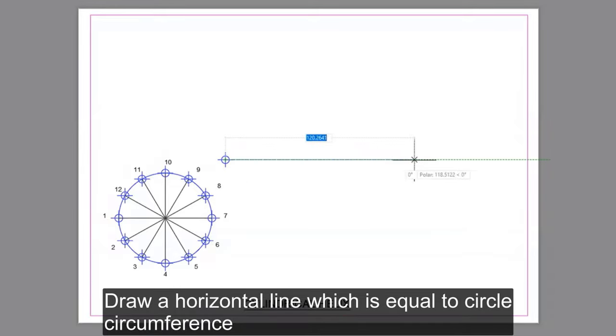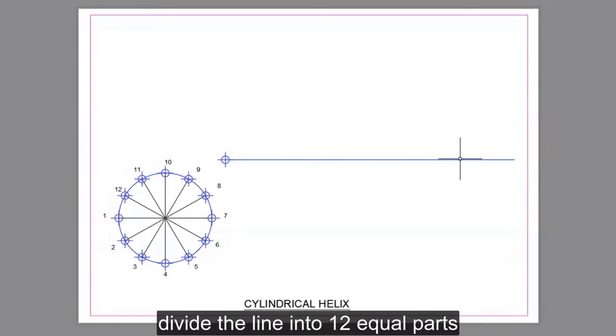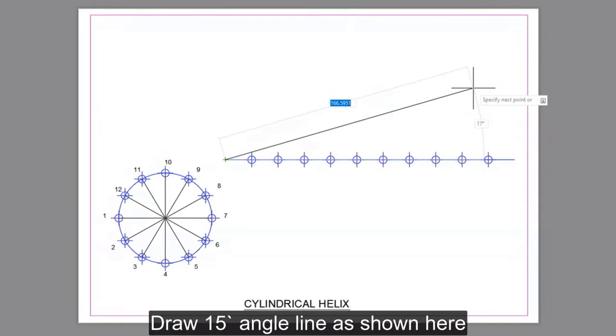Draw a horizontal line which is equal to circle circumference. Divide the line into 12 equal parts. Draw a 15 degree angle line as shown here.